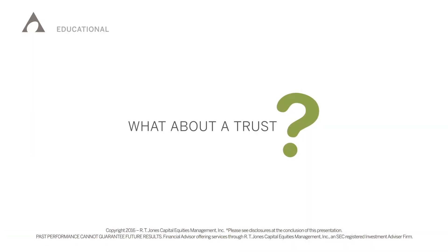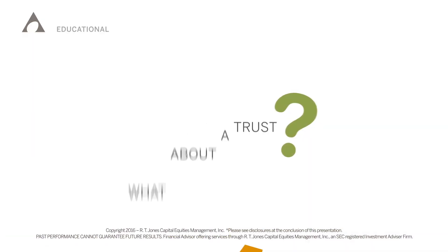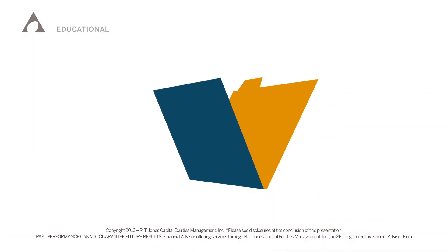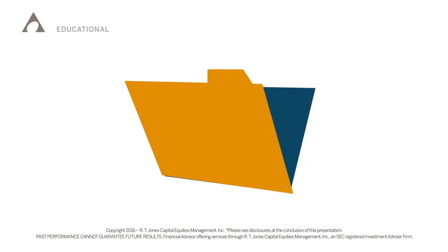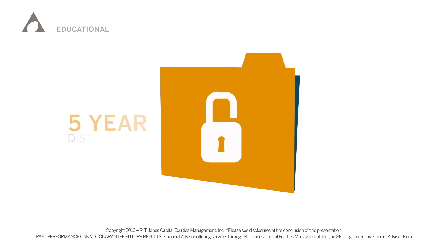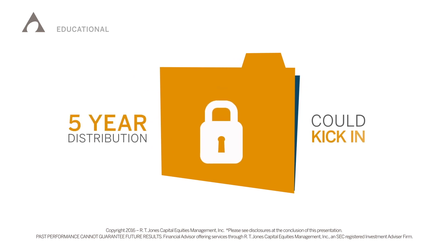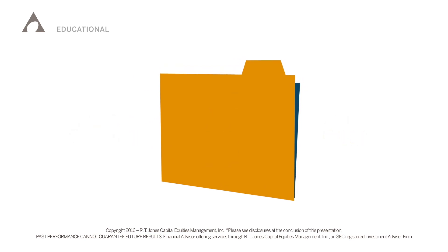What about setting up a trust? This can be a good way to pass on significant wealth. However, some custodians may have issues with the trust if they can't look through the trust to see the qualified beneficiaries, and the five-year distribution policy may come into effect.